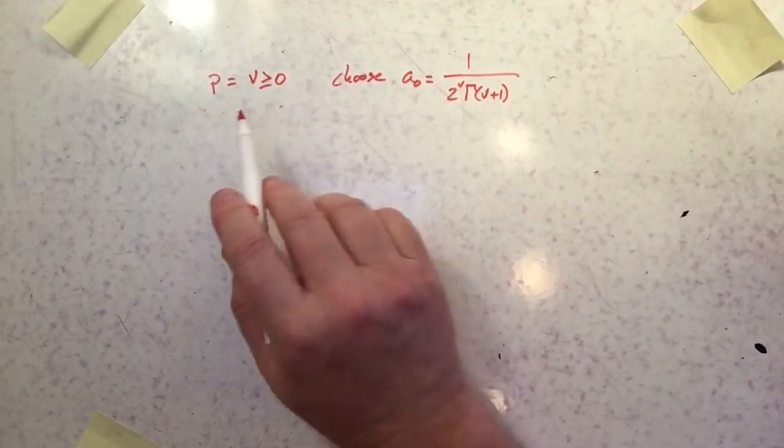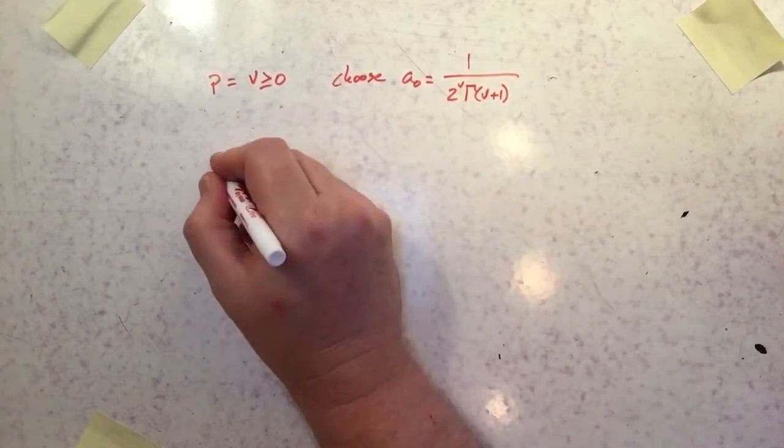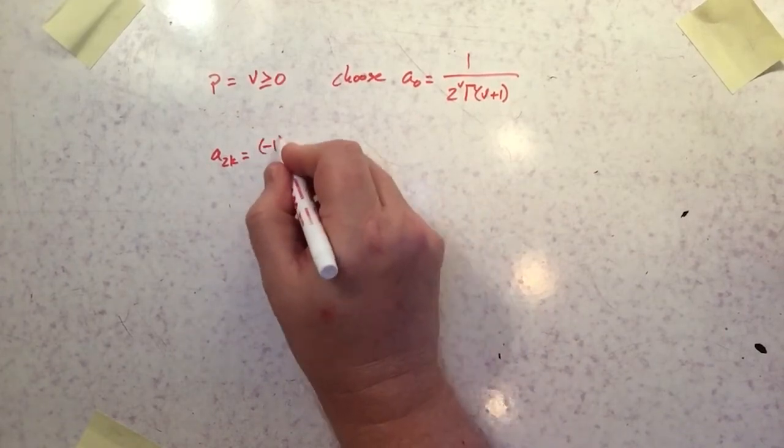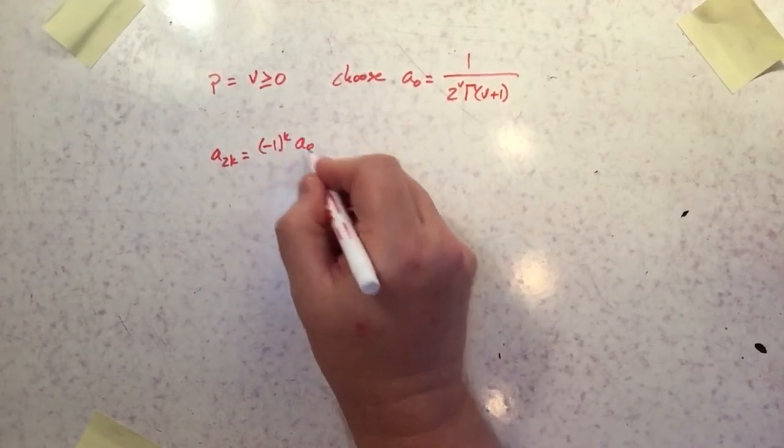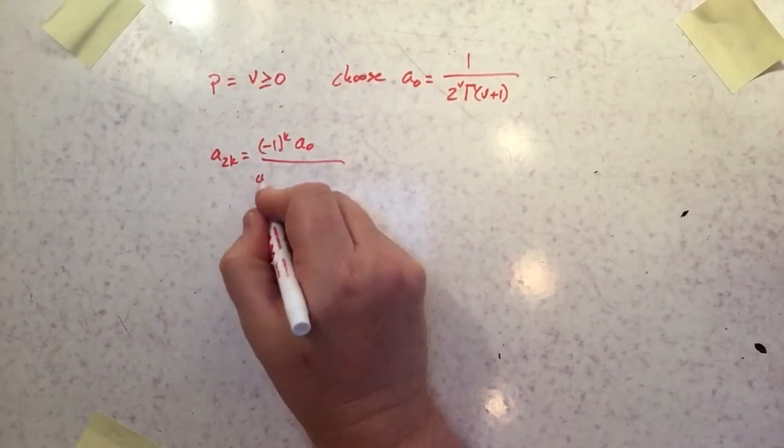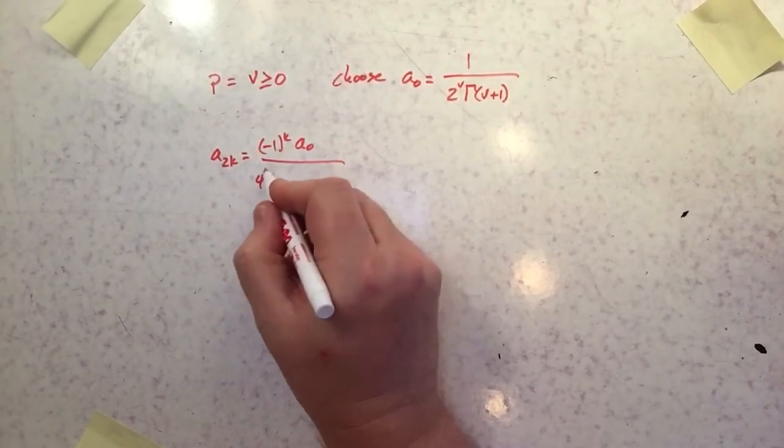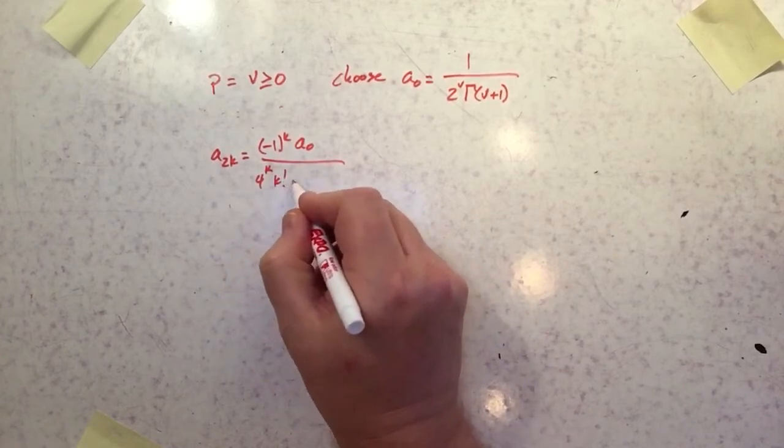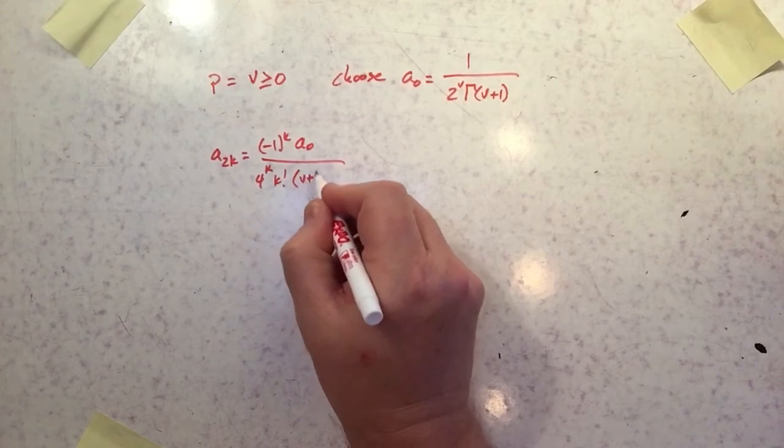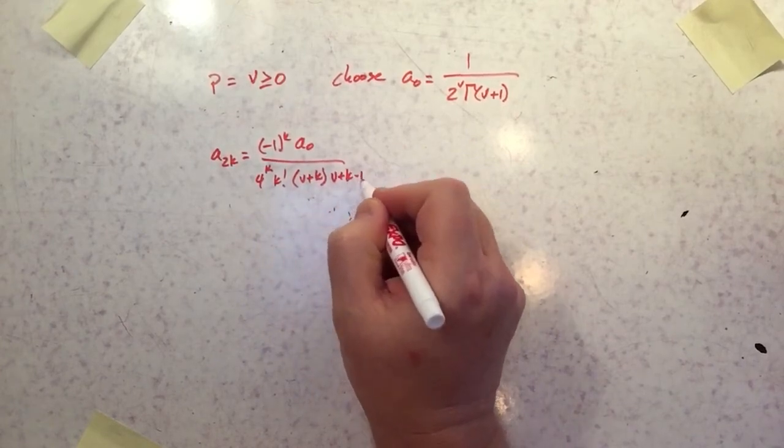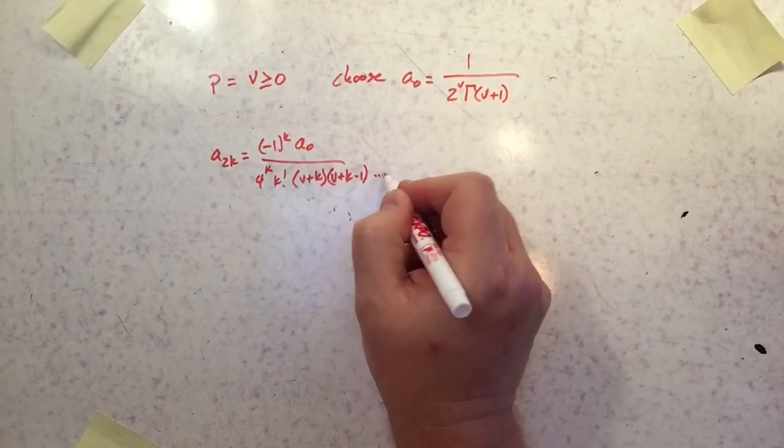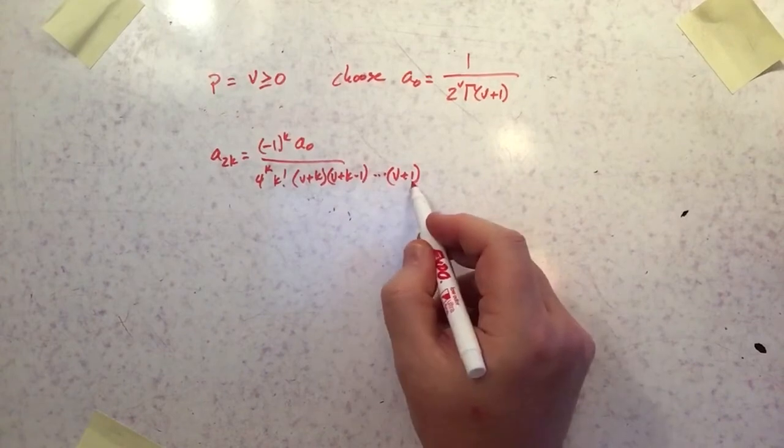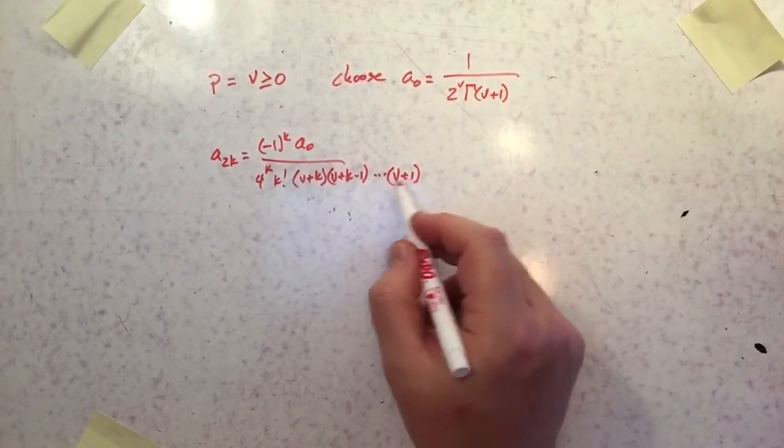When v is equal to p, that doesn't change our original recursive relationship. So we had a to the 2k. That was negative 1 to the k times a0. And then the whole thing was over 4 to the k times k factorial. And then the rest of it was this v plus k times v plus k minus 1, and that went all the way down to v plus 1 being the very last term. Because it wasn't a true factorial, it didn't terminate at 1, it terminated at v plus 1.